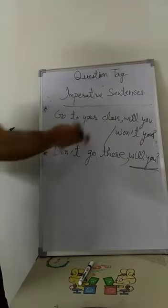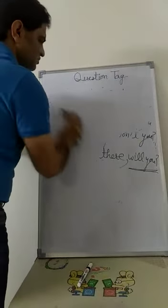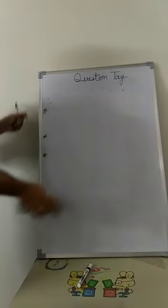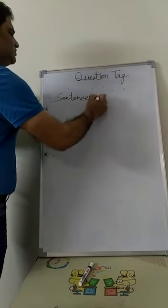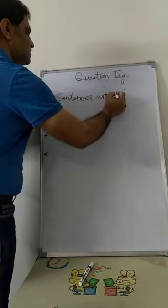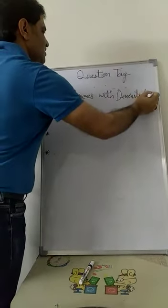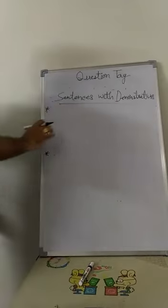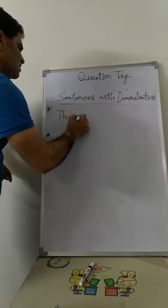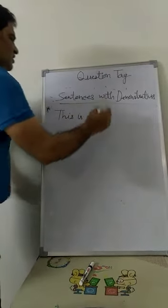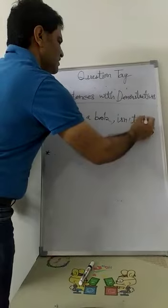Now we will have some more examples. Sentences with demonstratives - demonstrative pronouns. This is a book, isn't it?